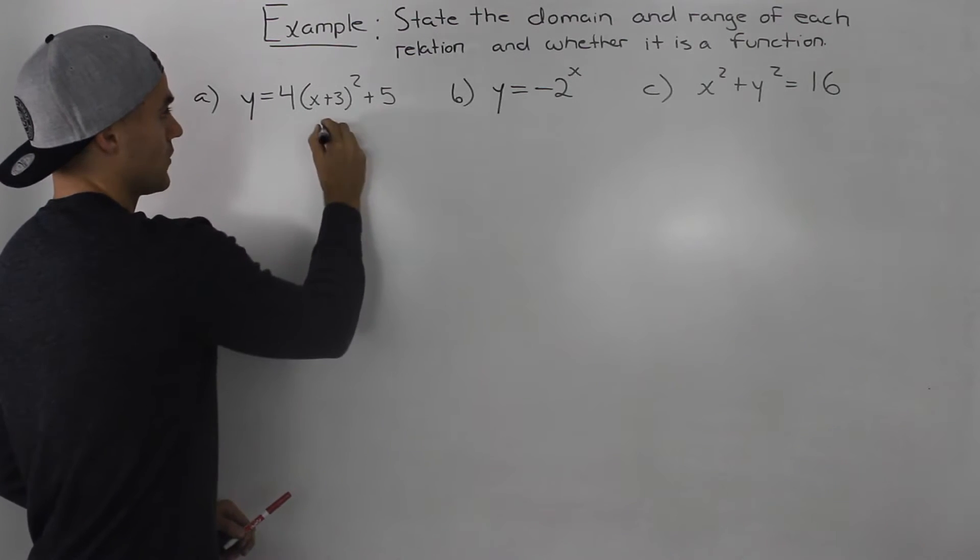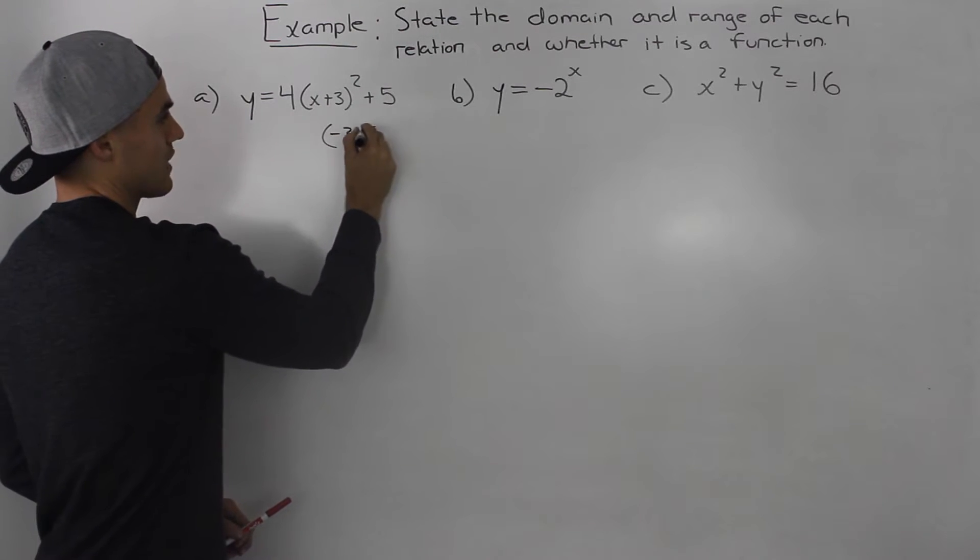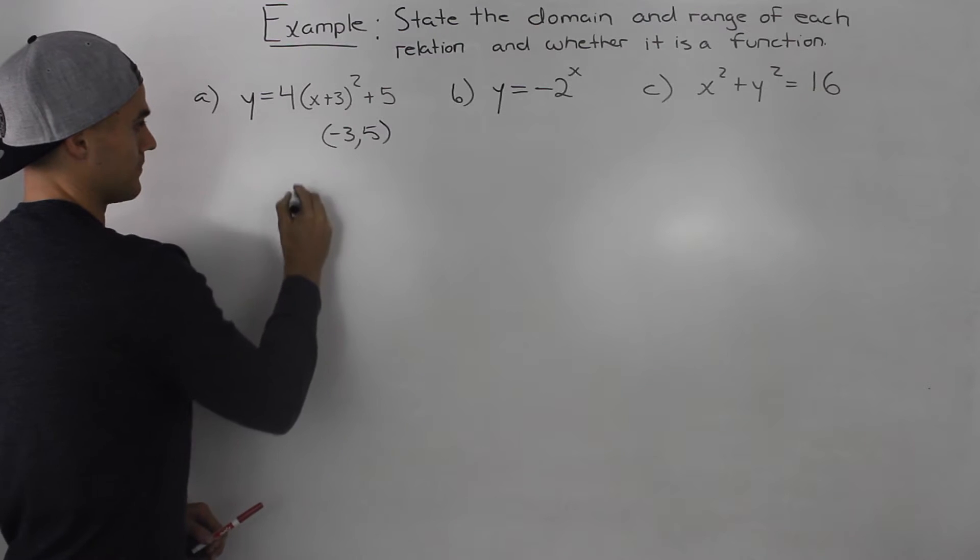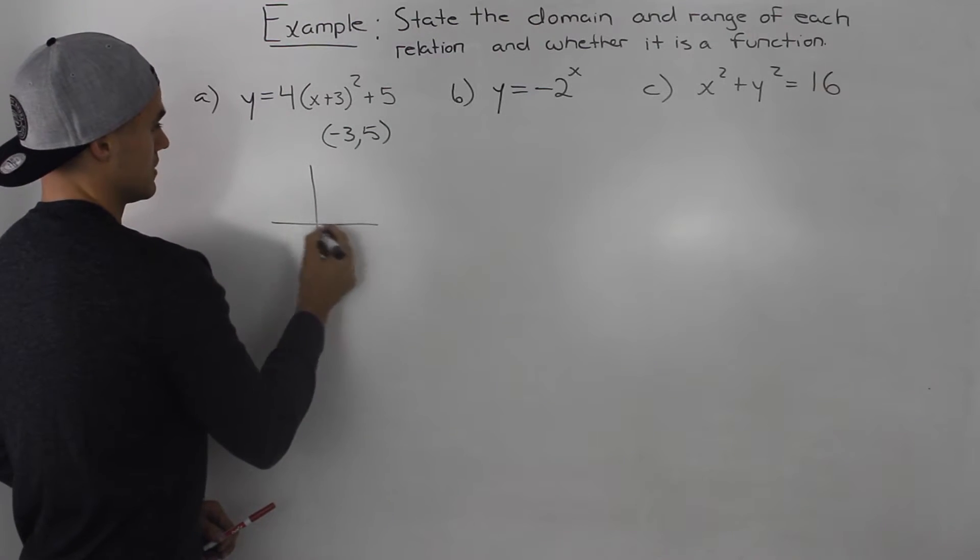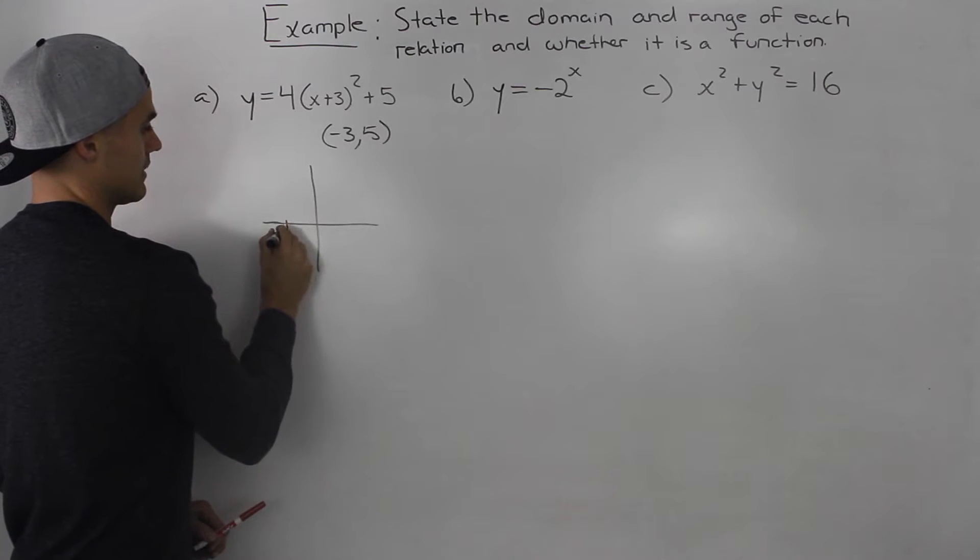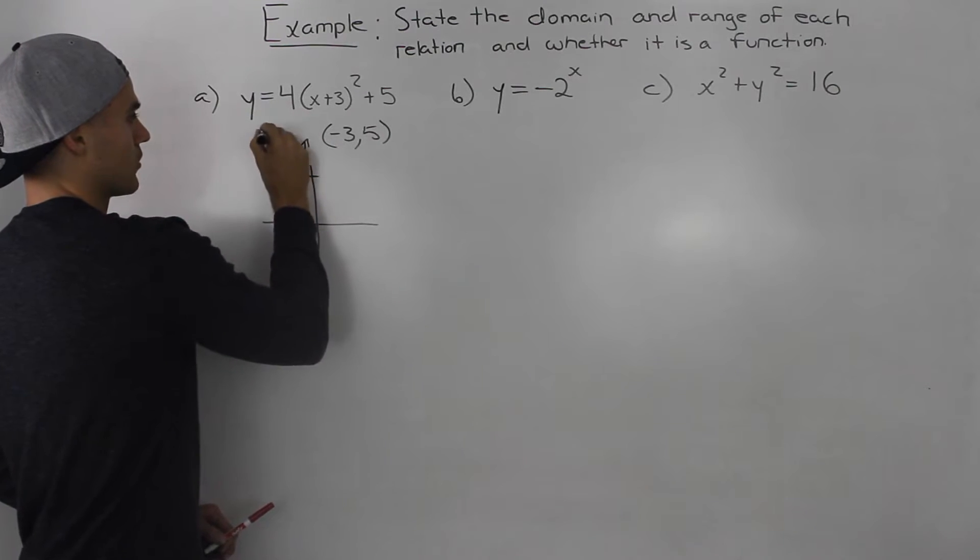It's in vertex form and the vertex is going to be at negative three and five and it's opening up. So if we draw this, a vertex at negative three and five. So over here and it's opening upwards.